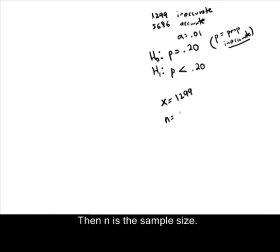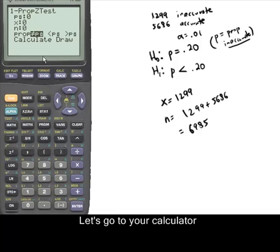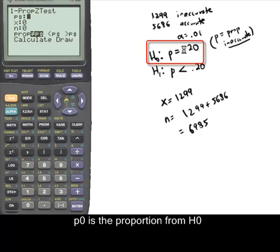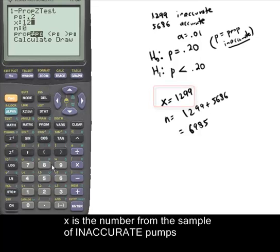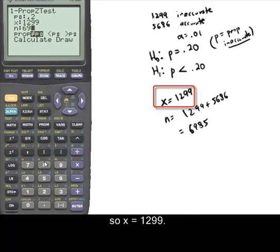And then N is the sample size. Well, 1299 inaccurate, 5686 accurate, N is going to be the sum of those two numbers. So that's going to be 6985 for N, your sample size. Now we've got all these things. Go to your calculator and let's plug them in. So P0 is the proportion from your H0. So that's P equals .20, so that's what I'm going to put in here, .20. X is the number from the sample of what we were looking for. We're looking for inaccurate, X is 1299. N is the sample size, 6985.